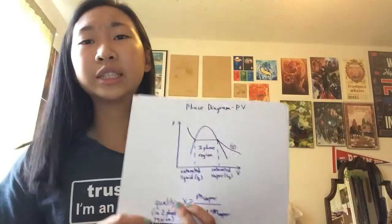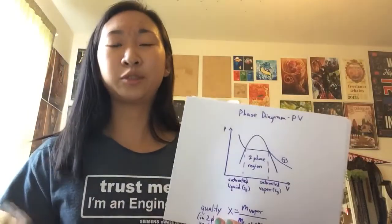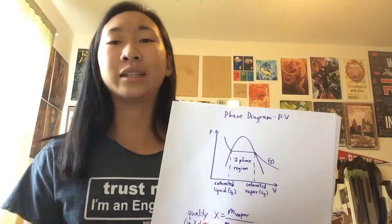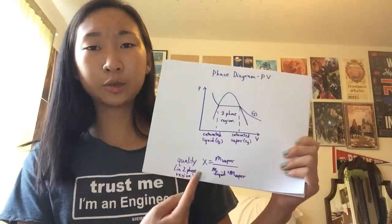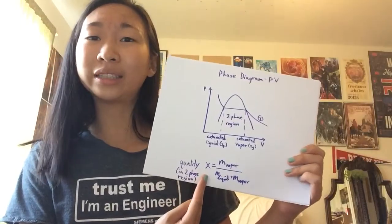Once you get to the middle two-phase region, it's exactly that, two phases. So you'll have a mixture of gas and liquid. That's described with x, the quality at that point.